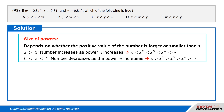If 0 is less than X is less than 1, then the number decreases as the power n increases: X is greater than X squared, is greater than X cubed, is greater than X to the power of 4, is greater than, and so on.